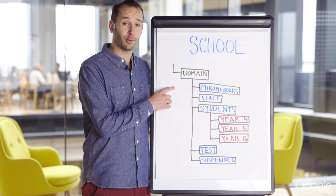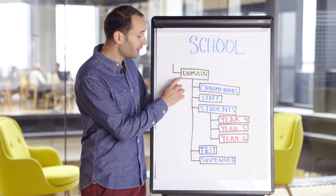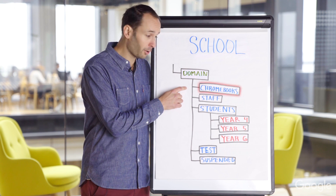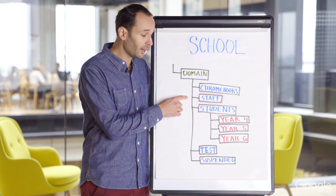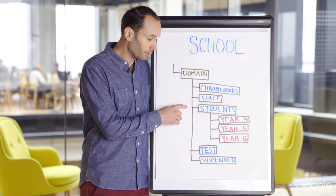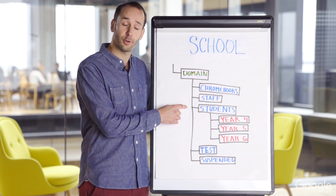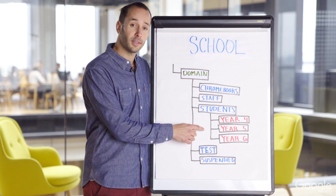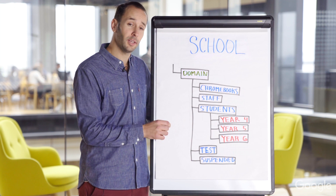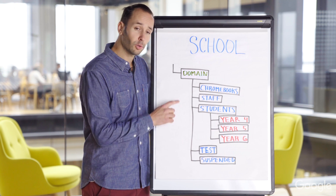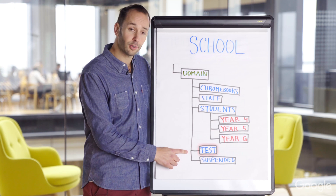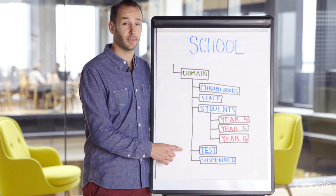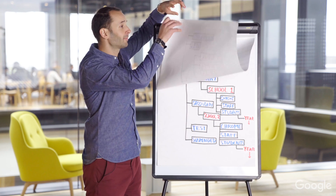This is the best practice for a single school. At the top you have the domain — this is called the root OU. Underneath that, we've created a Chromebooks OU, a Staff OU, and a Students OU. Underneath the Students OU, we have nested other OUs: Year 4, Year 5, and Year 6. This can be the graduating year or the actual year. We've also created a Test OU and a Suspended OU, for Chromebooks or possibly users who have been suspended.